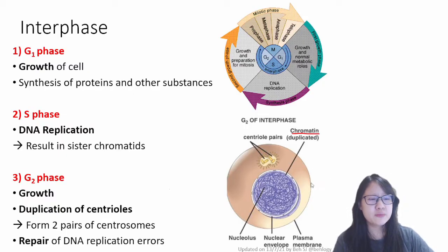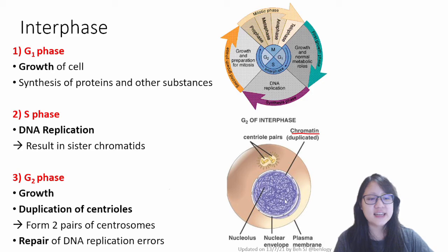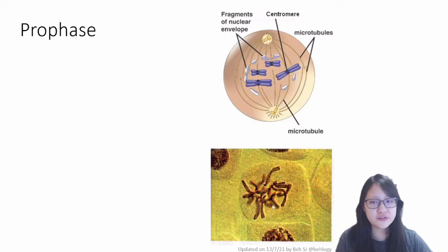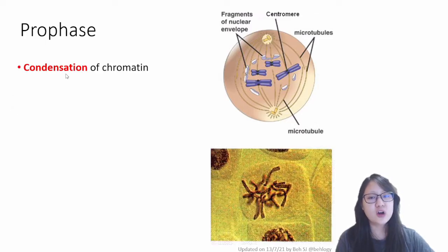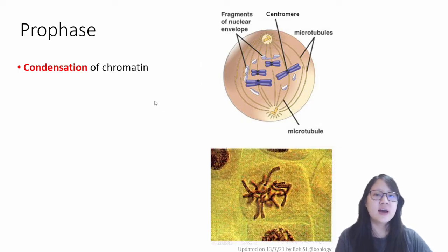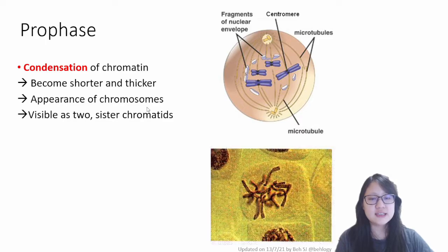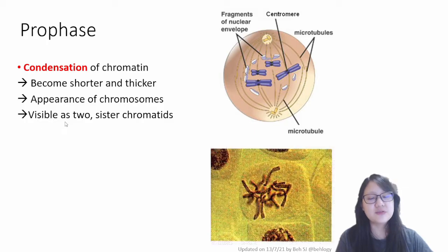Before we talk about prophase, we need to really look at the interphase cell — you can see how the chromatin is not yet condensed and they're not visible under the light microscope. What happens during prophase is that the chromatin condenses. Condensation of chromatin occurs and the chromosomes become shorter and thicker, and they appear under the light microscope visible as two sister chromatids — like a butterfly shape.